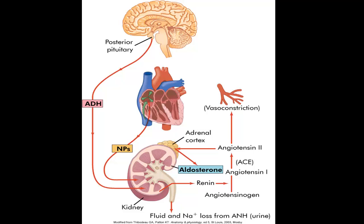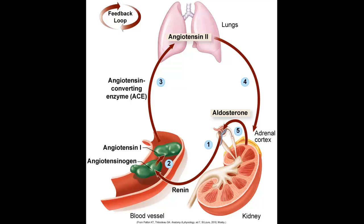We also have natriuretic peptides, illustrated on the picture here as NP. Natriuretic peptides are released from the heart when the heart stretches, and their purpose is to help get rid of excess fluid. If we have too much fluid on board, the posterior pituitary should notice and produce less ADH, or the heart notices it's being stretched too much and produces a natriuretic peptide. Aldosterone, produced by the adrenal cortex, stimulates the renin-angiotensin system. That system is a feedback loop to maintain normal blood pressure — the kidney senses blood pressure and responds.